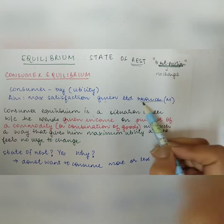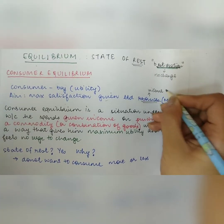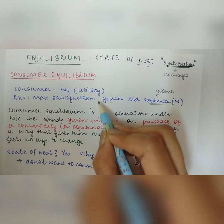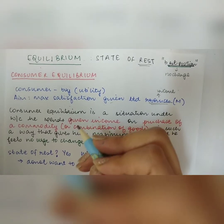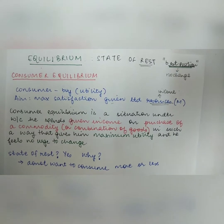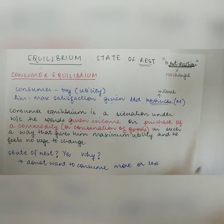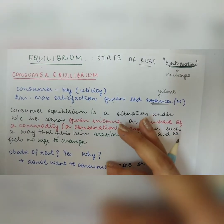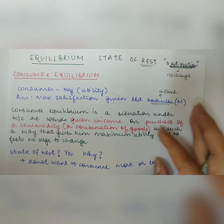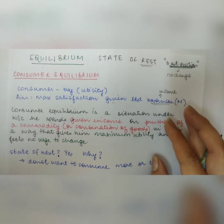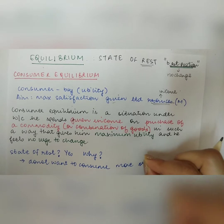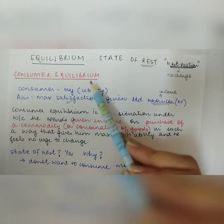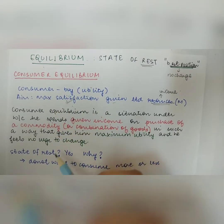Given the limited resources — the limited income that he has — the objective of the consumer is that with a given amount of income, he is maximizing his satisfaction by the consumption of the commodity, buying goods in such a way that it gives him the maximum satisfaction. Every consumer is faced with the problem of how he should spend his limited income to obtain maximum satisfaction, so that when he reaches the state of maximum satisfaction, he will be in equilibrium.